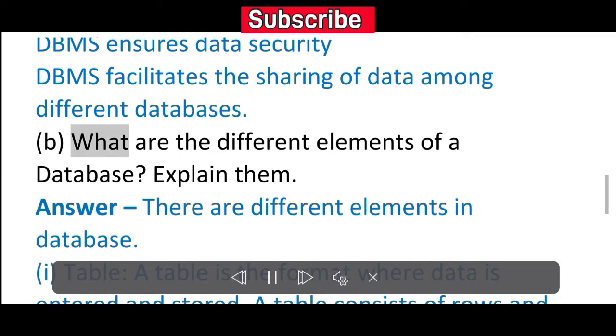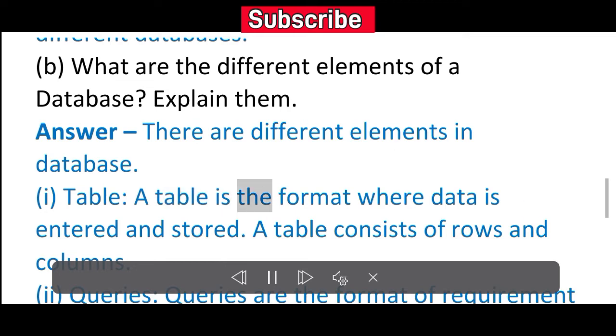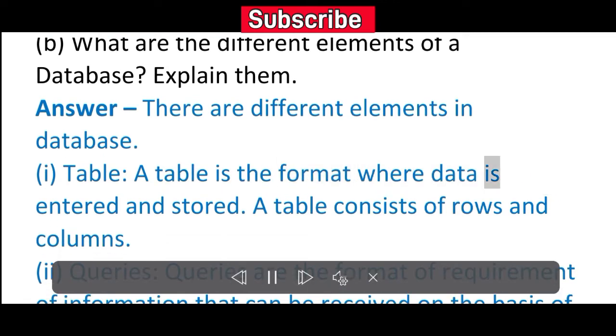B. What are the different elements of a database? Explain them. Answer: There are different elements in database. (i) Table: A table is the format where data is entered and stored. A table consists of rows and columns.